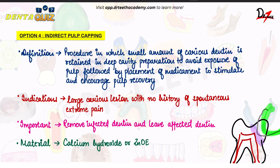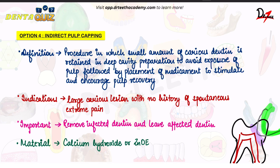The cavity preparation is done up till here, and then there is placement of a medicament to stimulate pulp recovery. This is done because we try to avoid the exposure of the pulp, so we leave some part of the affected dentine. By definition, it is the procedure in which a small amount of carious dentine is retained in a deep cavity preparation to avoid exposure of the pulp, followed by placement of a medicament to stimulate and encourage pulp recovery.